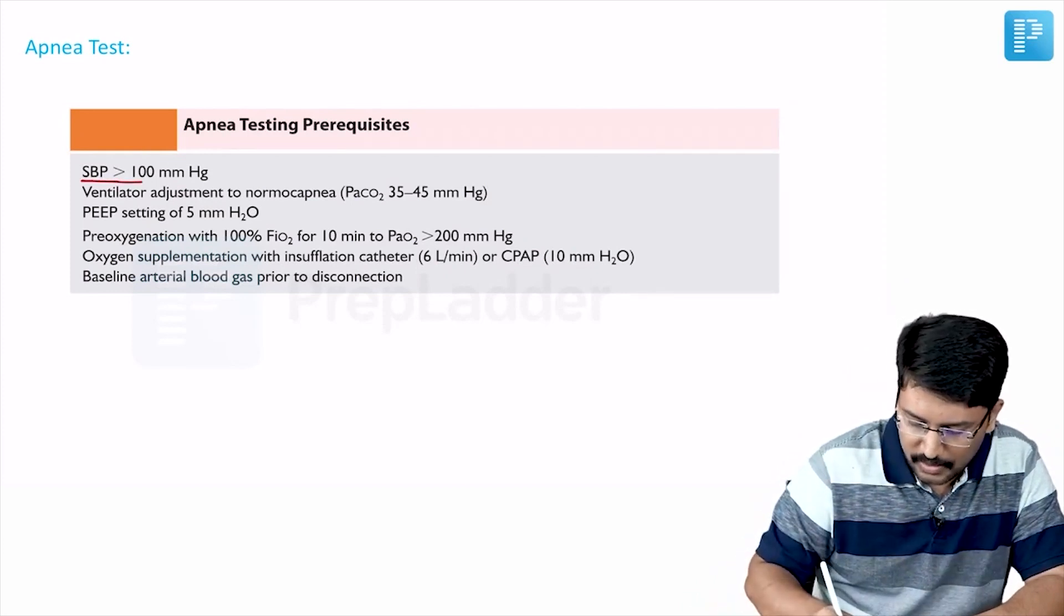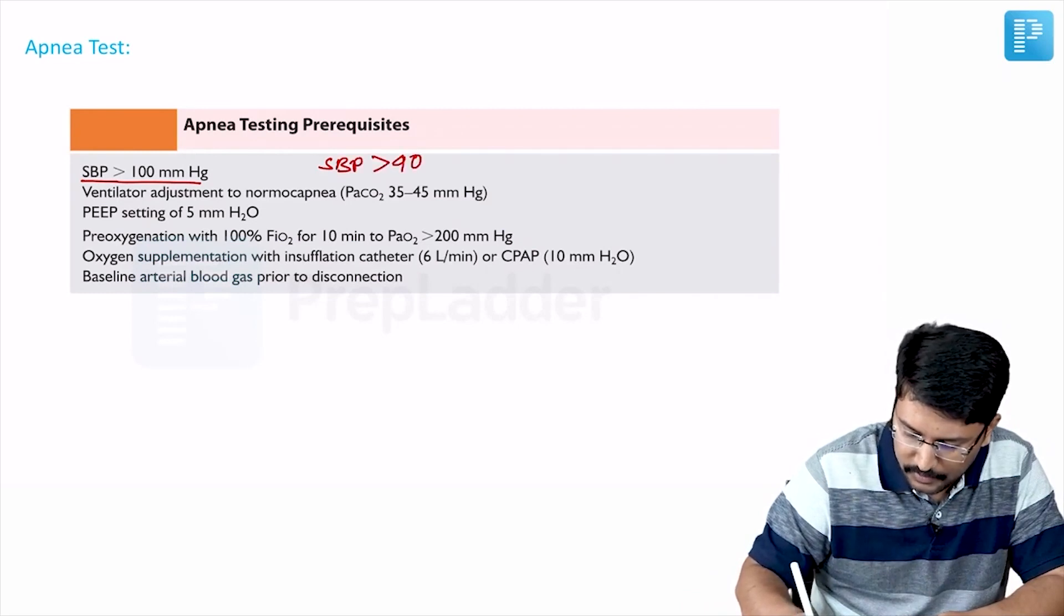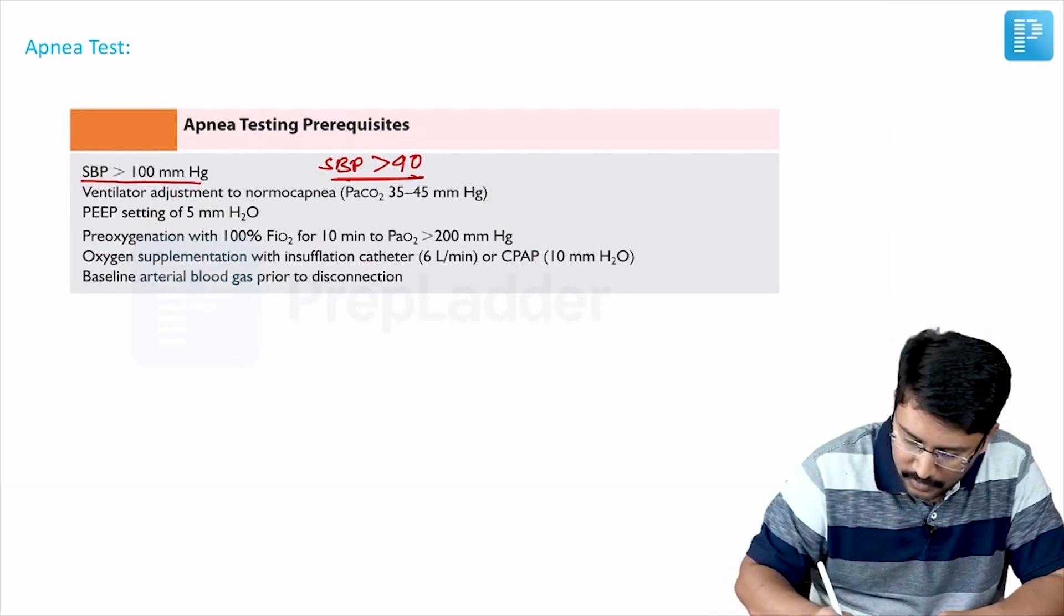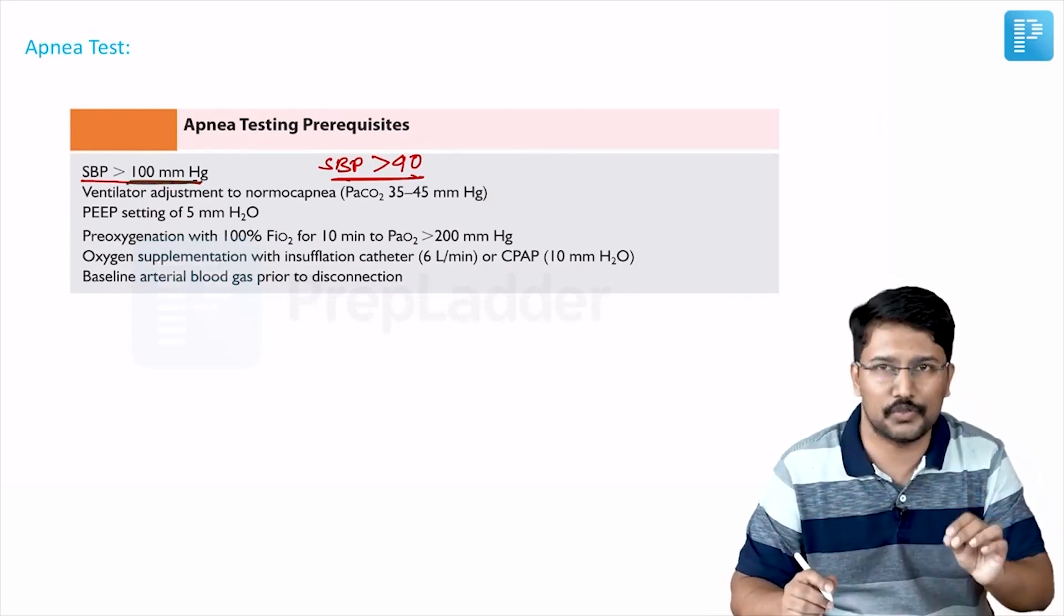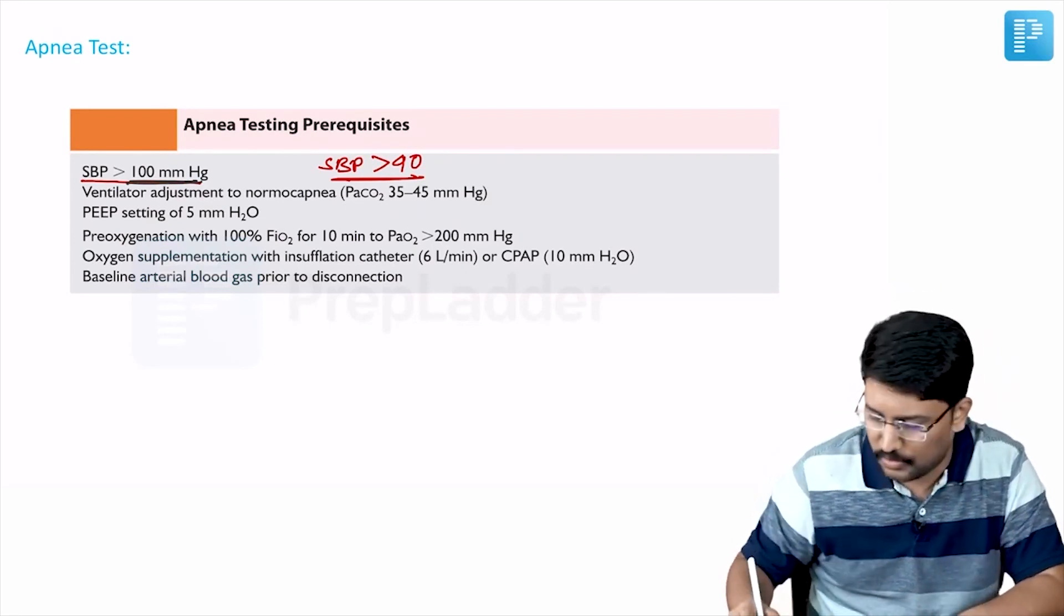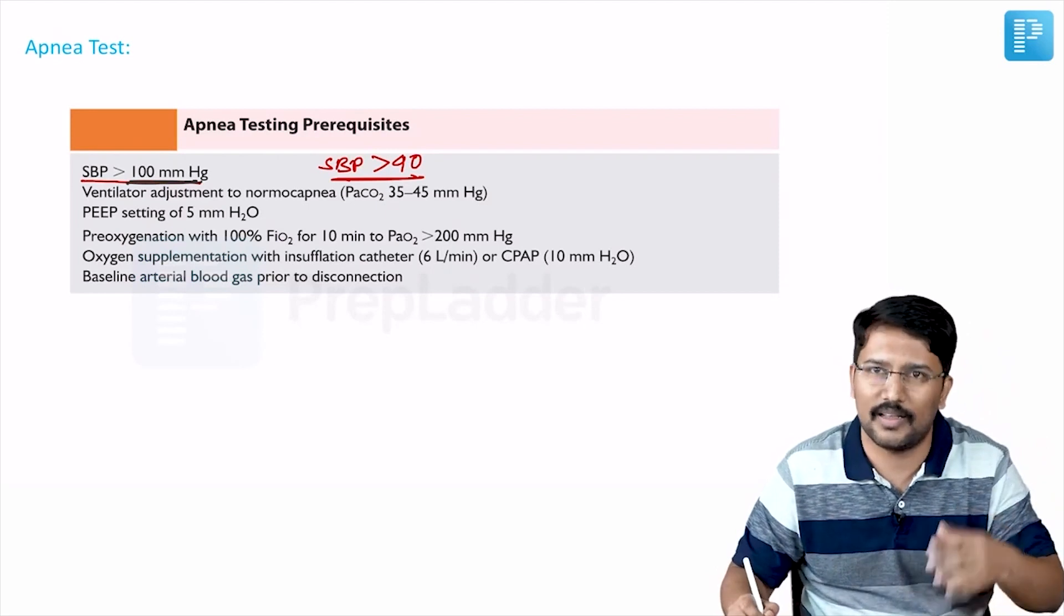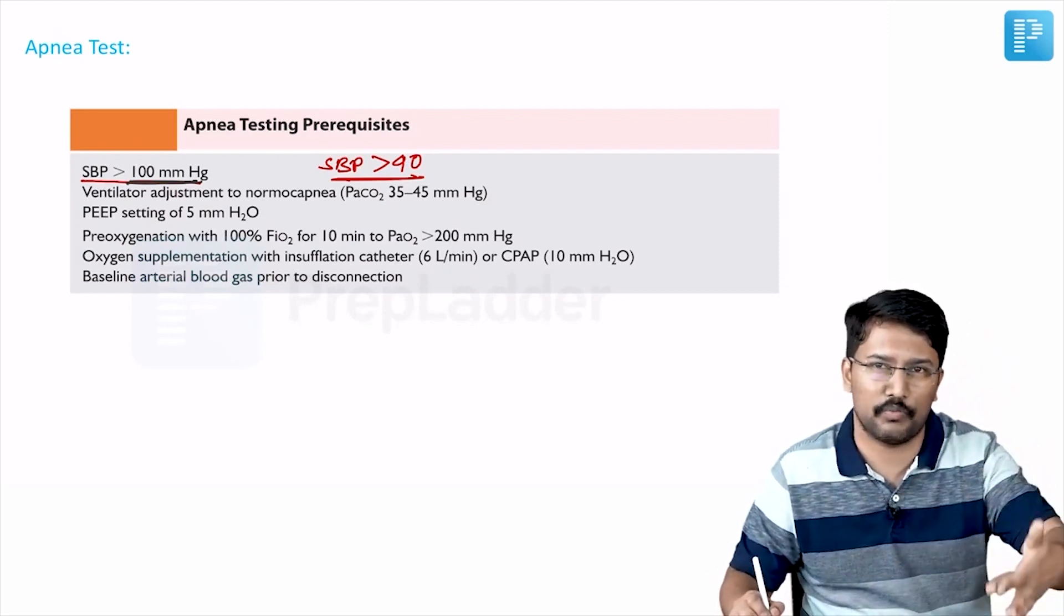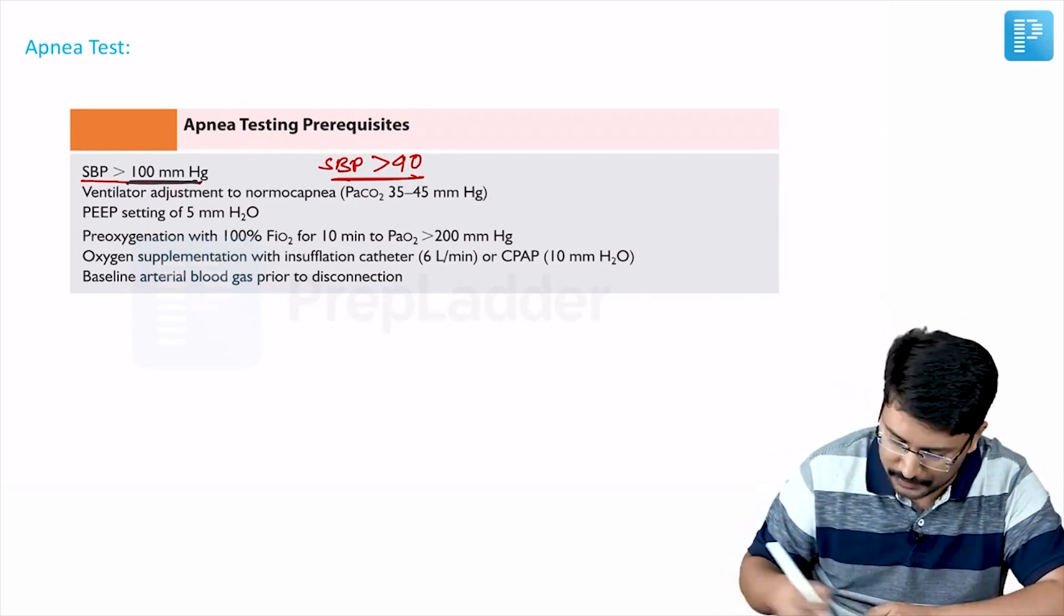First, the patient should be in normal tension. Some books mention a SBP of more than 90 enough. For example, our API textbook mentioned that SBP of more than 90 is enough. Harrison and other textbooks mentioned 100. In simple words, the patient should be in normal tension. You can take your freedom to write 90 or 100 in your written papers. In exams, the option would rather be specific.